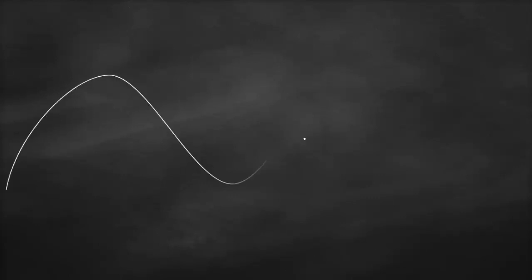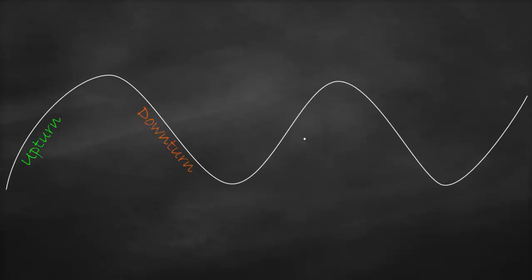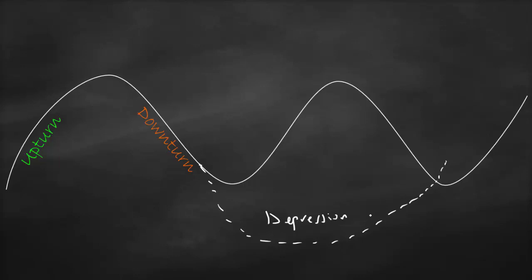Let's look at our business cycle. We know that here we have upturn and here we have a downturn. What will happen if this downturn becomes a severe and longer downturn — a longer contraction? This is called a depression. Is this good or bad for the economy? It's definitely terrible. To know how bad a depression can get, just go to Google, search the Great Depression in 1929, press images, and look at how miserable people were during the Great Depression. Therefore, every country needs to stabilize its business cycle — avoid severe contraction, the depression — by using monetary policy and fiscal policy.